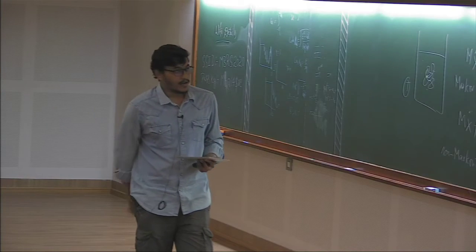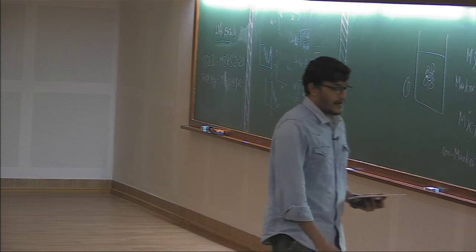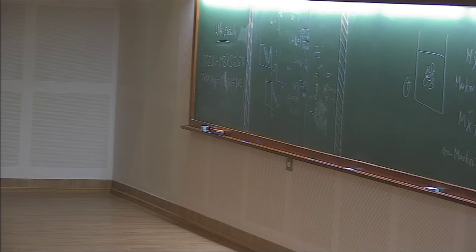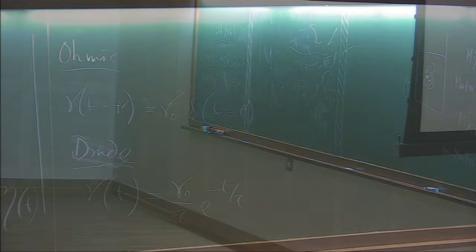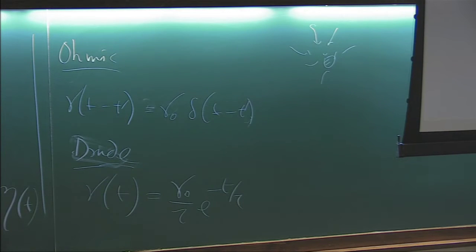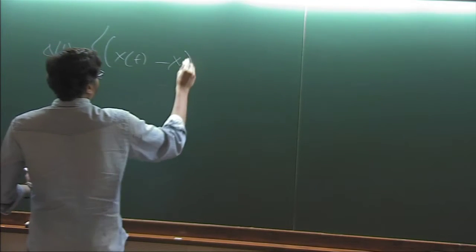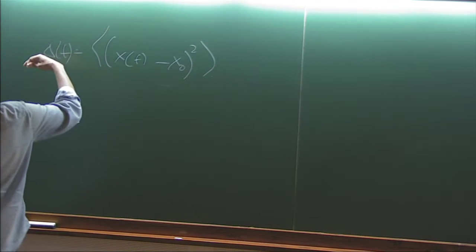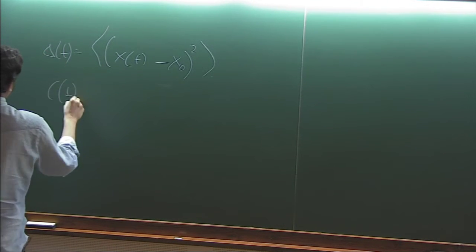So question is, these are all phenomenological, and what are the quantities of interest? There are many quantities, some are the mean square displacement of that Brownian particle. So we basically have this delta T. So this is the mean square displacement, and also the velocity correlation maybe.